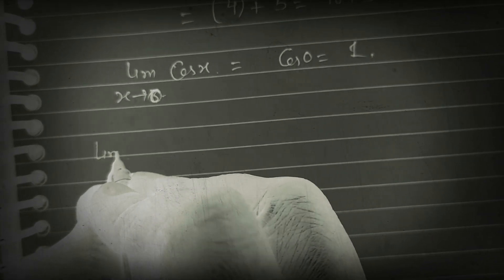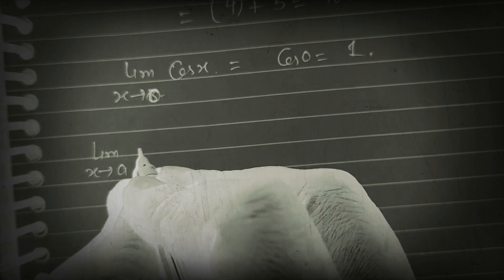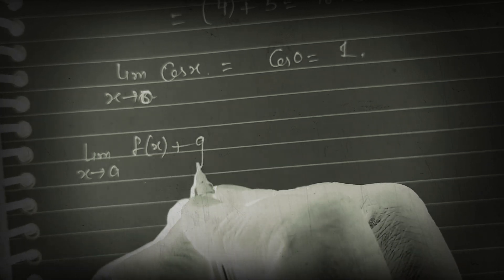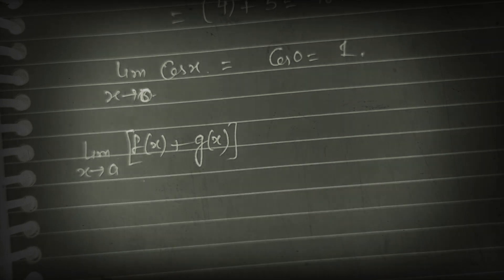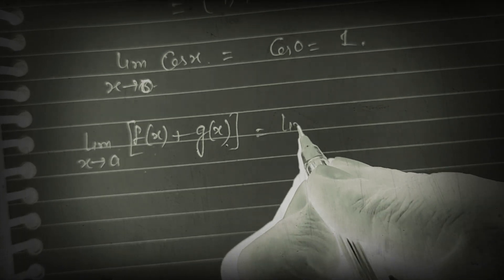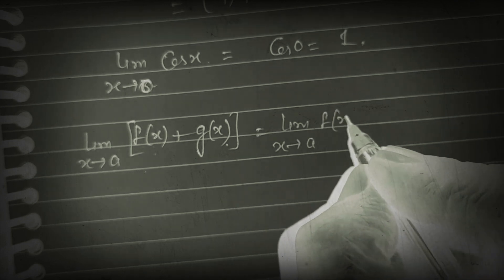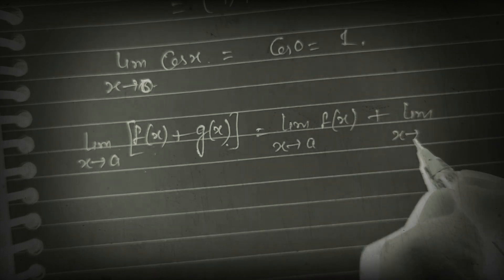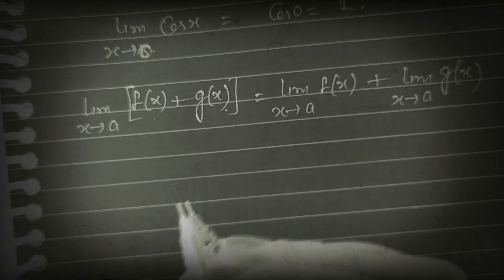Suppose limit x tends to a of [f(x) + g(x)] — there are two functions in addition. Then we will put the limit on both functions: limit x tends to a of f(x) plus limit x tends to a of g(x). Dono par limit put ho jayegi.